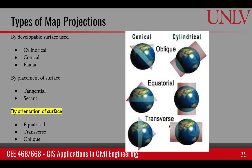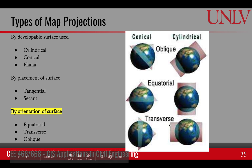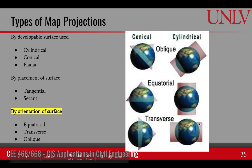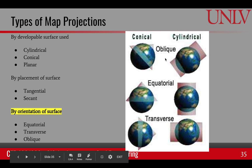Another classification is based on the orientation of the surface. If the surface is tangential along the equator, it's called equatorial. If it's tangential along the meridian, it's called transverse. Any other orientation is called oblique. These three orientations — equatorial, transverse, and oblique — apply to both cylindrical and conical developable surfaces.